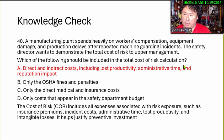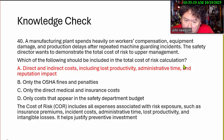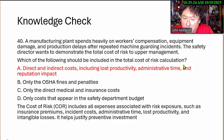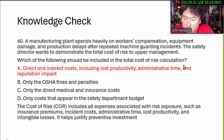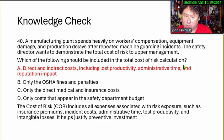The answer is A — direct and indirect costs, including lost productivity, administrative time, and reputational impact. The cost of risk is everything associated with that risk exposure. We want to include it because these are real costs. Your time to investigate the accident, the cost of lost productivity — these are real costs.